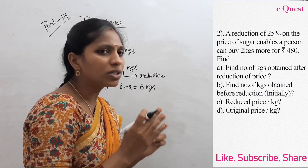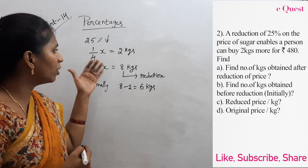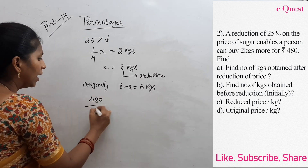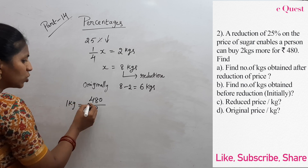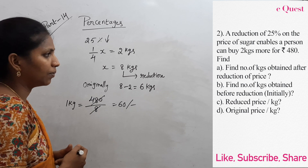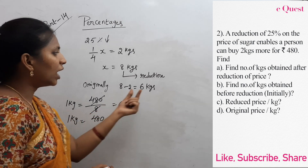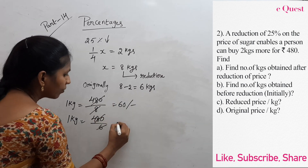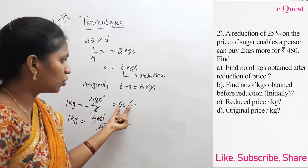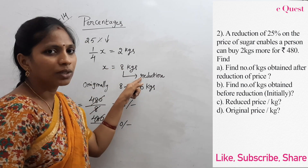Third question is reduced price per kg, and fourth is original price per kg. After reduction, 8 kgs for 480 rupees: 480 by 8 equals 60 rupees per kg after reduction. Original price per kg: 480 by 6 kgs originally equals 80 rupees per kg. So originally there are 6 kgs at 80 rupees per kg, and after reduction 8 kgs at 60 rupees per kg.